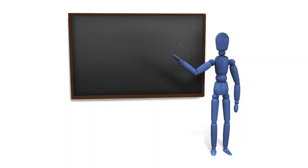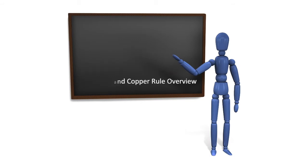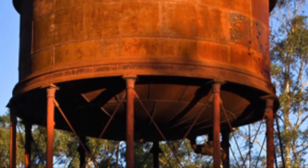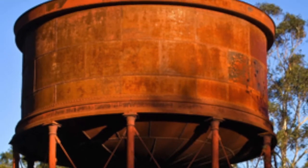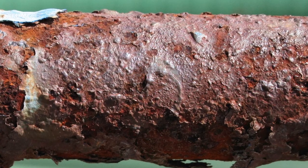In this course we will cover the following areas: an introduction to the corrosion process, galvanic corrosion, factors influencing corrosion, corrosion testing, calcium carbonate saturation, and the lead and copper rule. Corrosion can be defined as the process by which something, especially a metal, is destroyed progressively by chemical action.